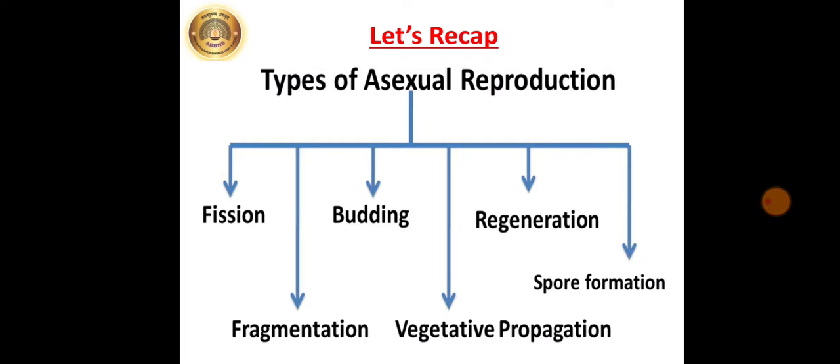Let's recap. We have learnt about various types of asexual reproduction in our previous video. We have learnt about fission, fragmentation, budding, vegetative propagation, regeneration and spore formation. Let's begin with next part of the lesson.